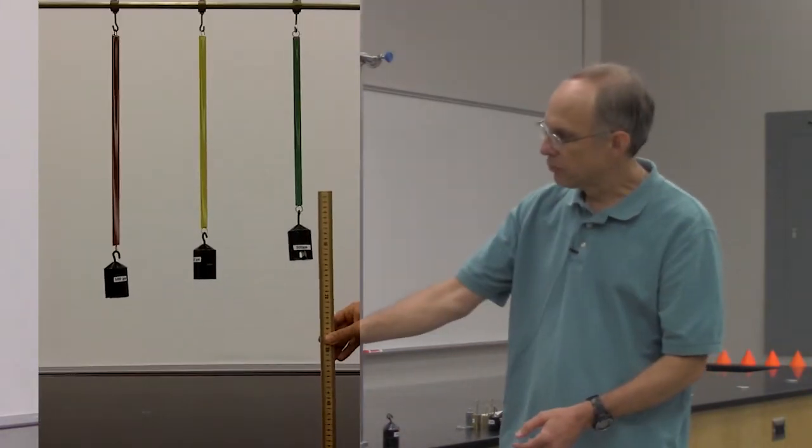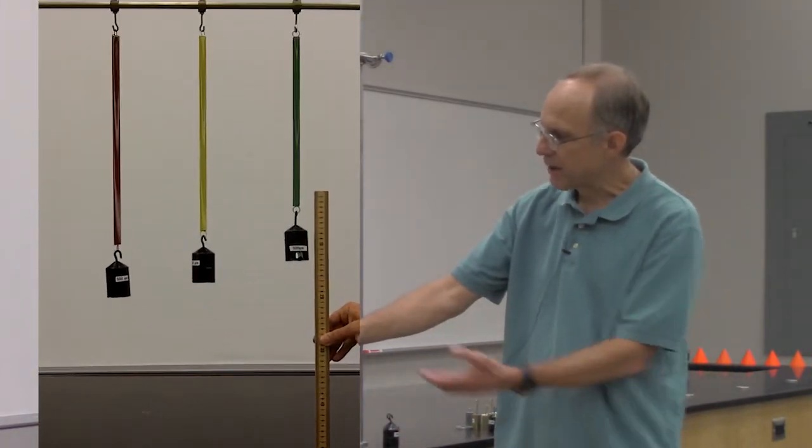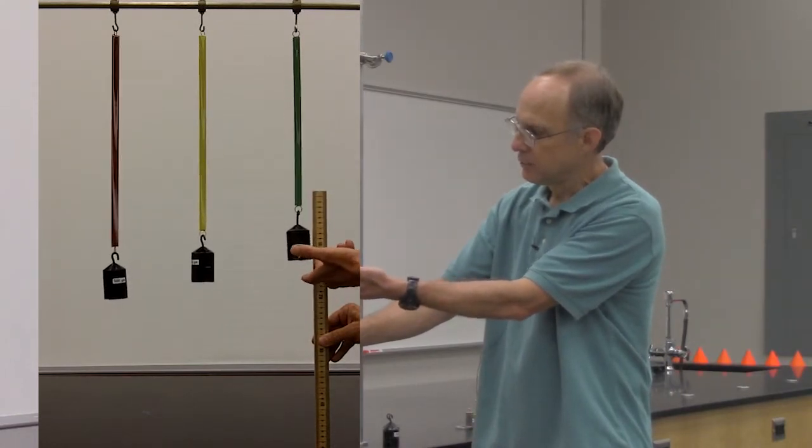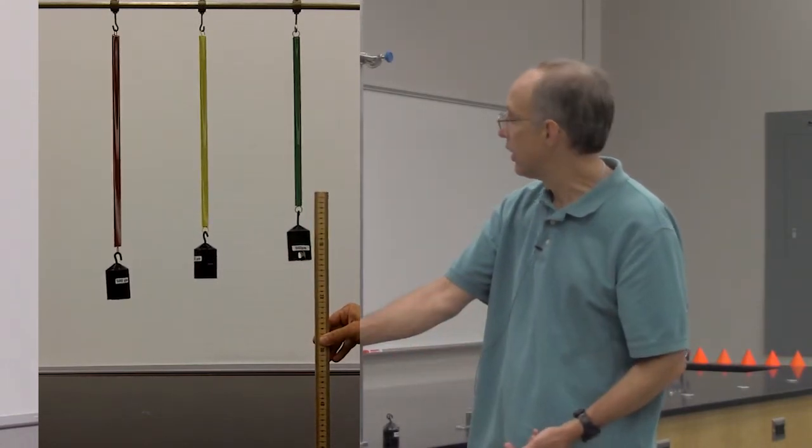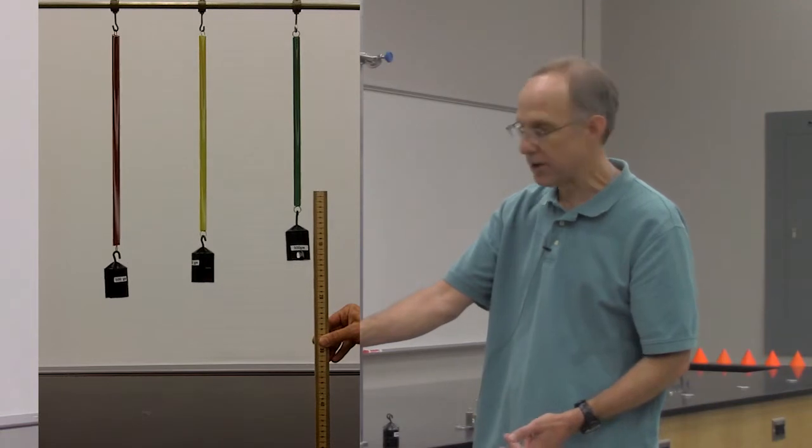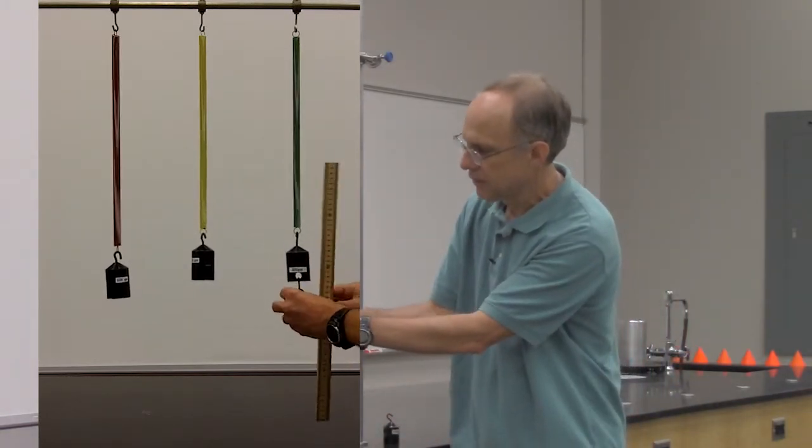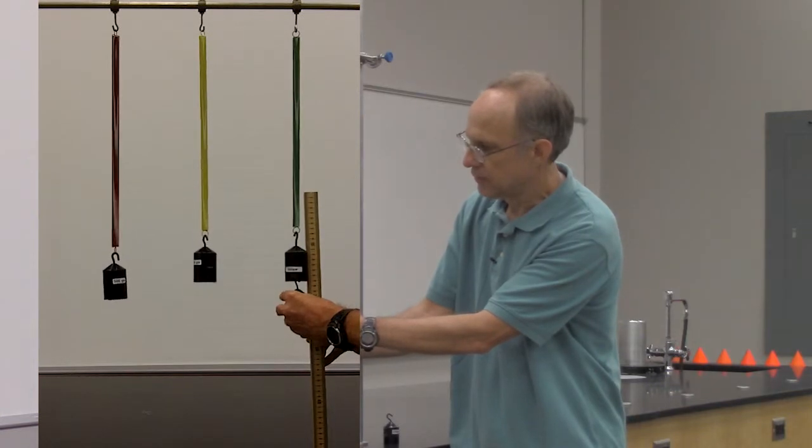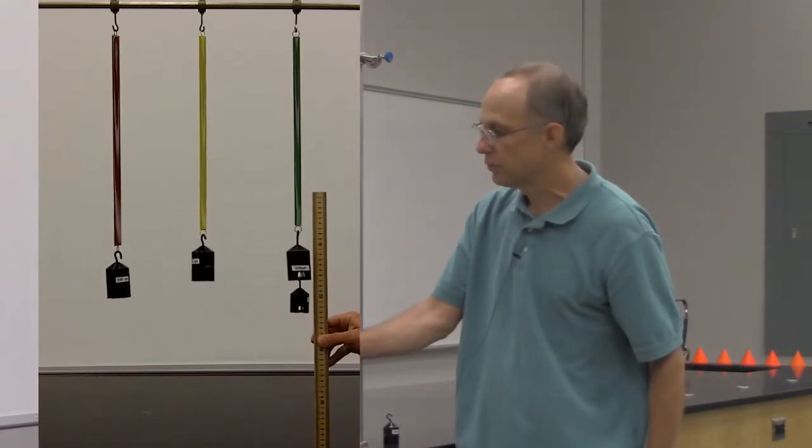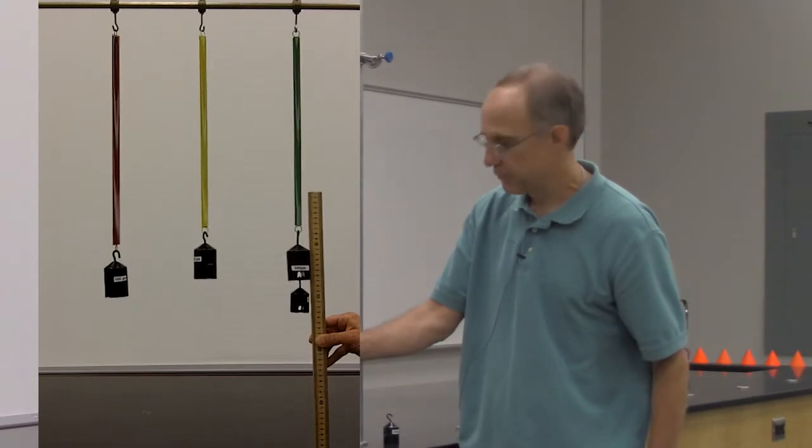Using a ruler, we've measured the distance to the bottom of this 500 gram mass to be positioned at the 12.8 cm mark on this ruler. If we add another 200 grams, this length now stretches down to 16.7 cm.